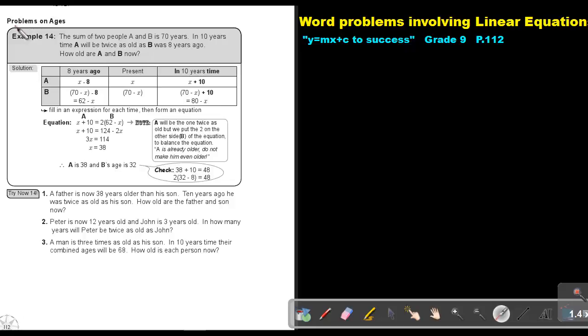We are going to focus on problems on age. Example 14: The sum of two people, A and B, is 70 years. In 10 years time, A will be twice as old as B was 8 years ago.